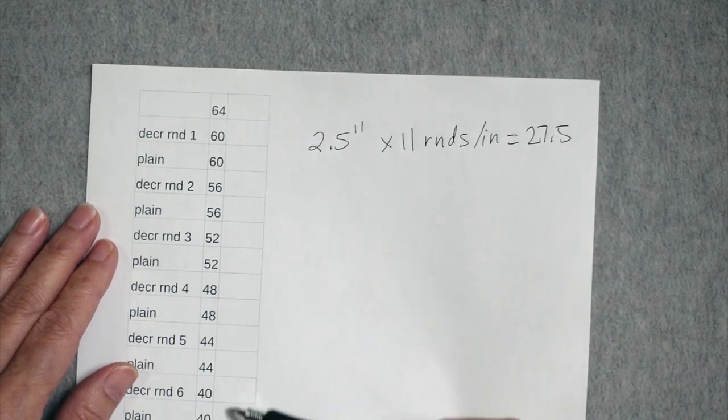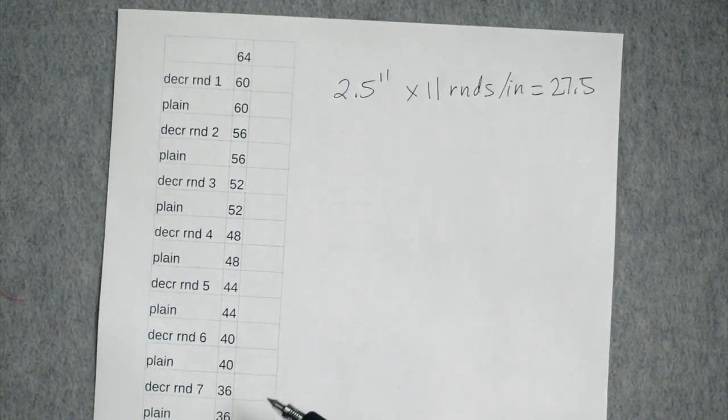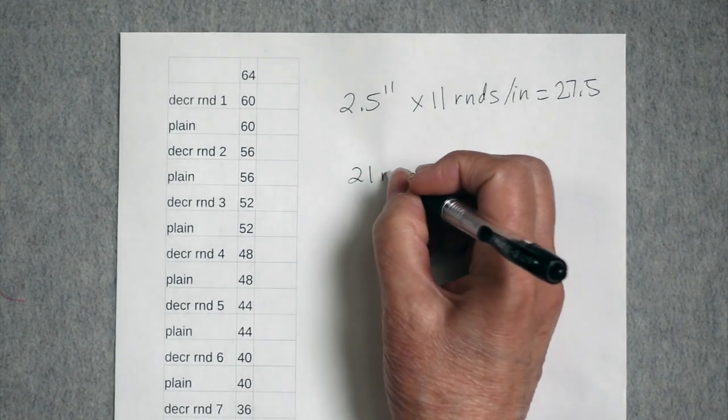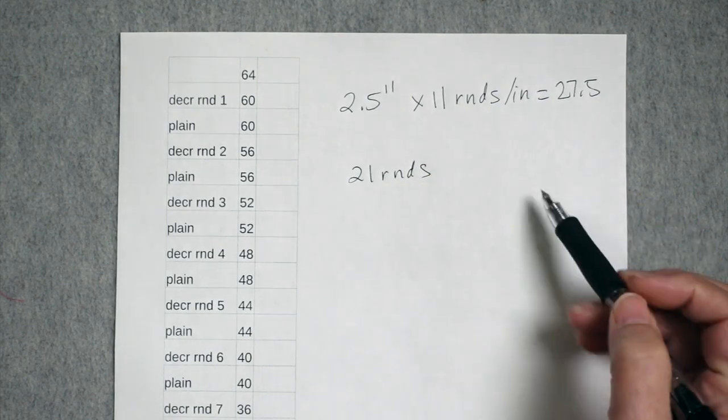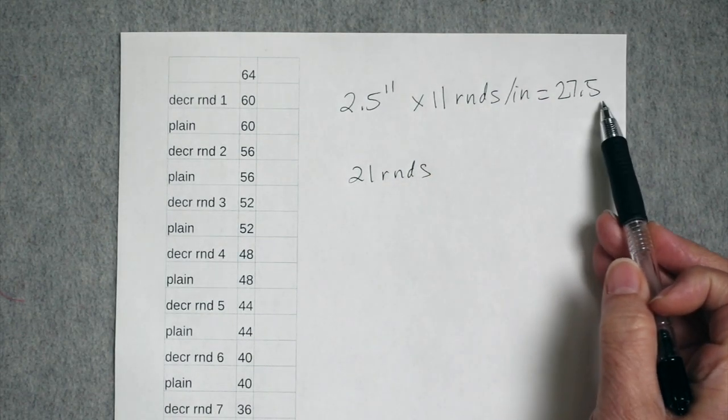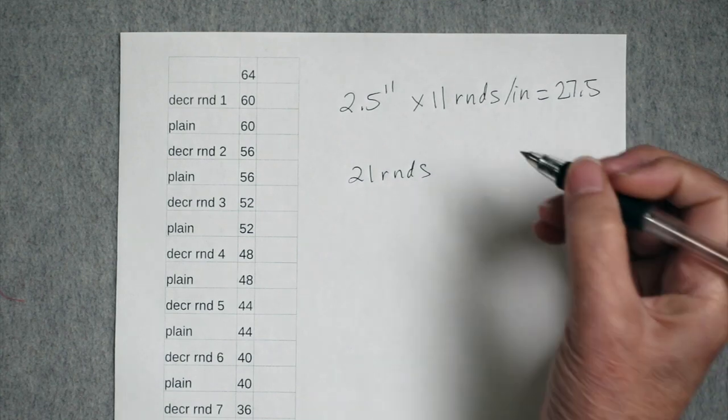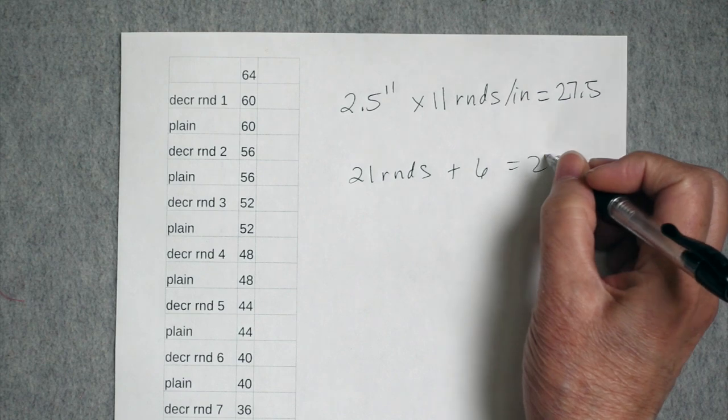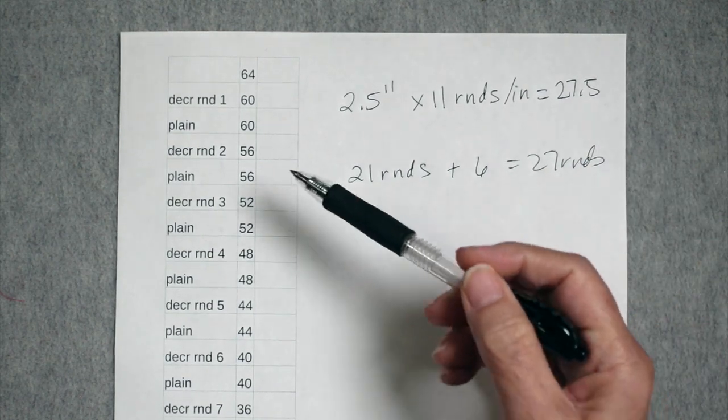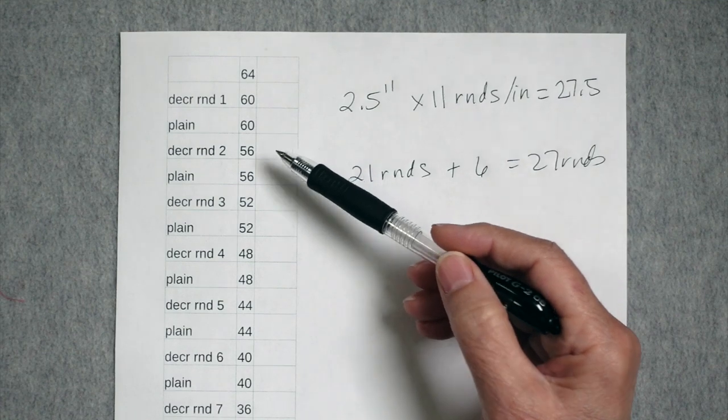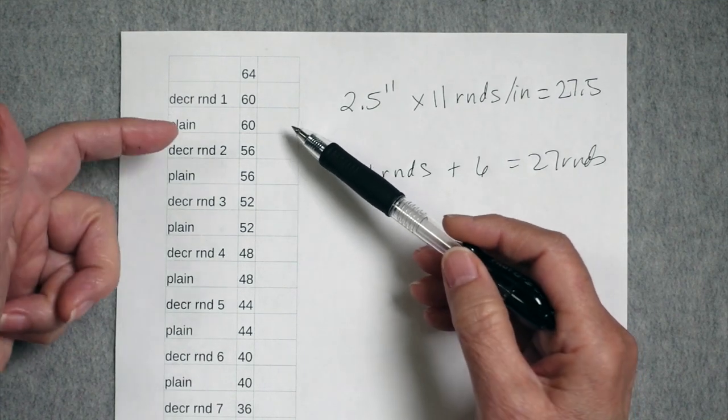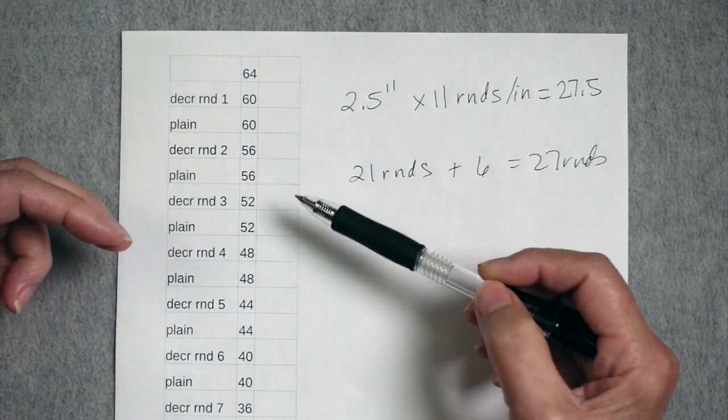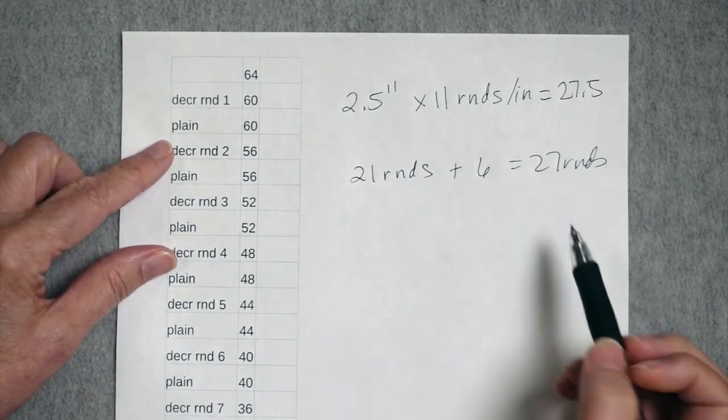So originally, remember this particular toe we calculated out it was 21 rounds. So the original toe is 21 rounds. I need to add six or seven rounds in order to make it long enough for Helen. Let's just say we want to add six to get 27 rounds. So what I would do for Helen, I would add extra plain rounds, and I would add them at the beginning to increase the length of the toe at the base. So I would add six.